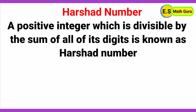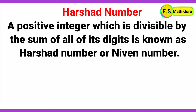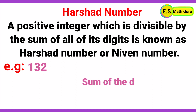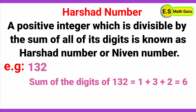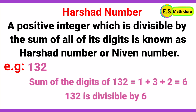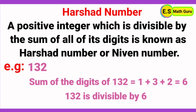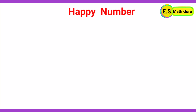Next, Harshad number. A positive integer which is divisible by the sum of all of its digits is known as a Harshad number or Niven number. For example, 132: the sum of the digits is 1 + 3 + 2 = 6. Here, 132 is divisible by 6, so 132 is a Harshad number.